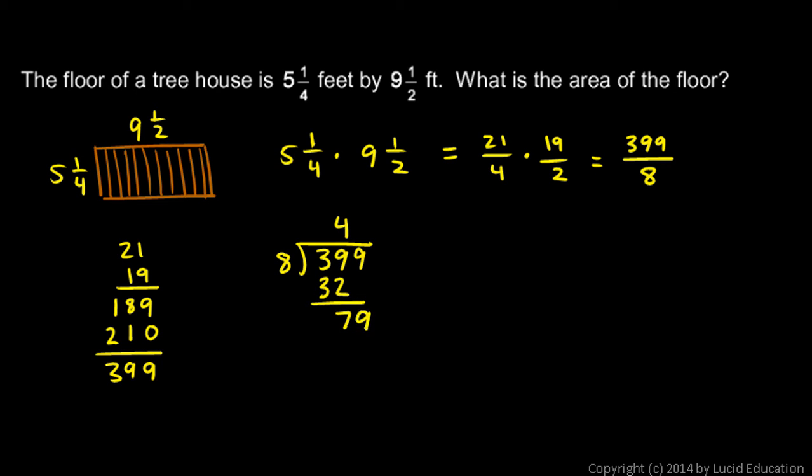We bring down the 9. 8 will go into 79 nine times. So then we multiply 9 times 8 is 72. And we subtract, and we get 7, and we're done. So it's 49 remainder 7. And what that 7 remainder means is really 7 eighths. So that's our answer. 49 and 7 eighths.